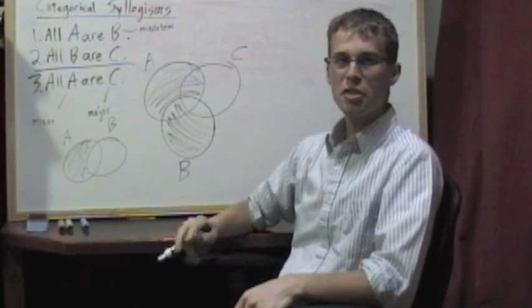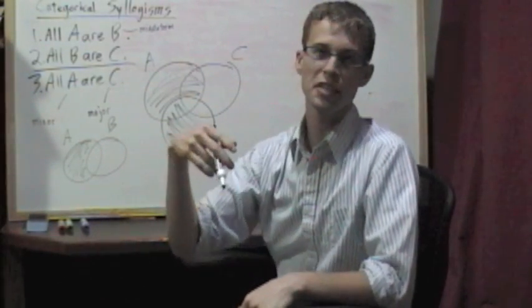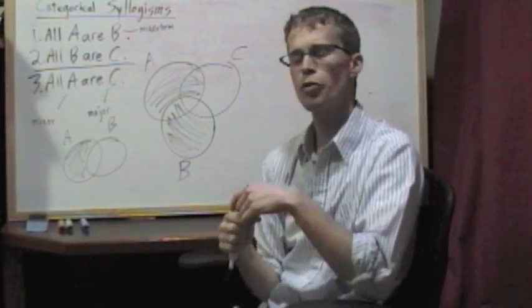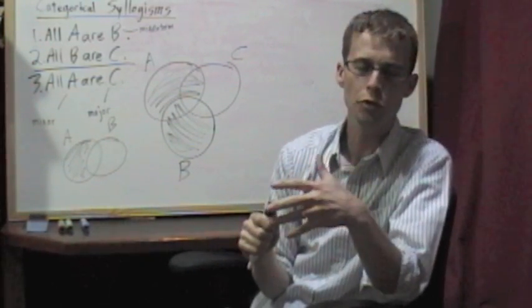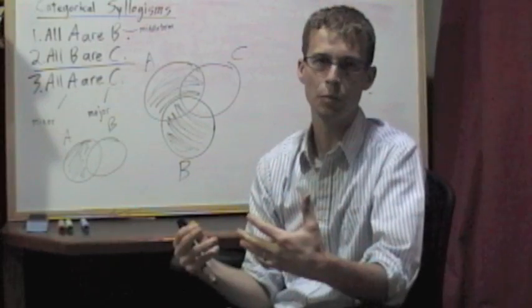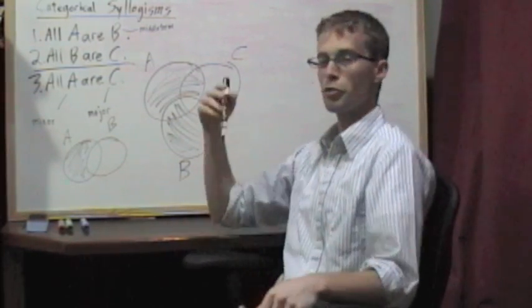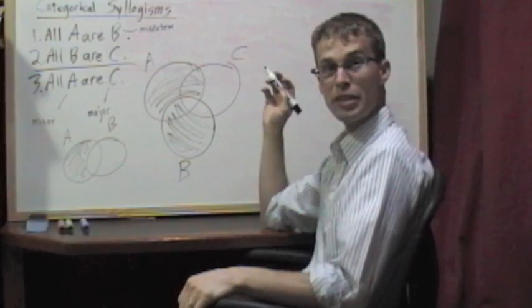All you're doing is you're diagramming the premises because diagramming something represents it as if it were true, and then we find out whether the conclusion also has to be true or whether it's possible for it to be false when the premises were true.